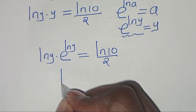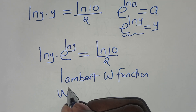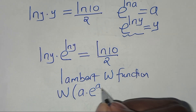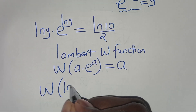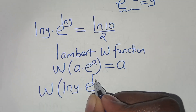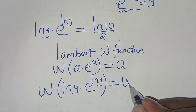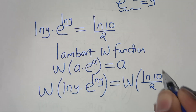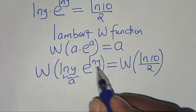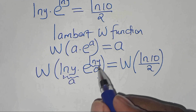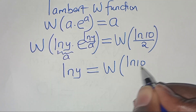Now, the next step is to apply the Lambert W function, which states that W(a·e^a) = a. Applying this property on both sides, we get W(ln(y)·e^(ln y)) equals W(ln(10)/2). Since ln(y) plays the role of a, this implies that ln(y) equals W(ln(10)/2).